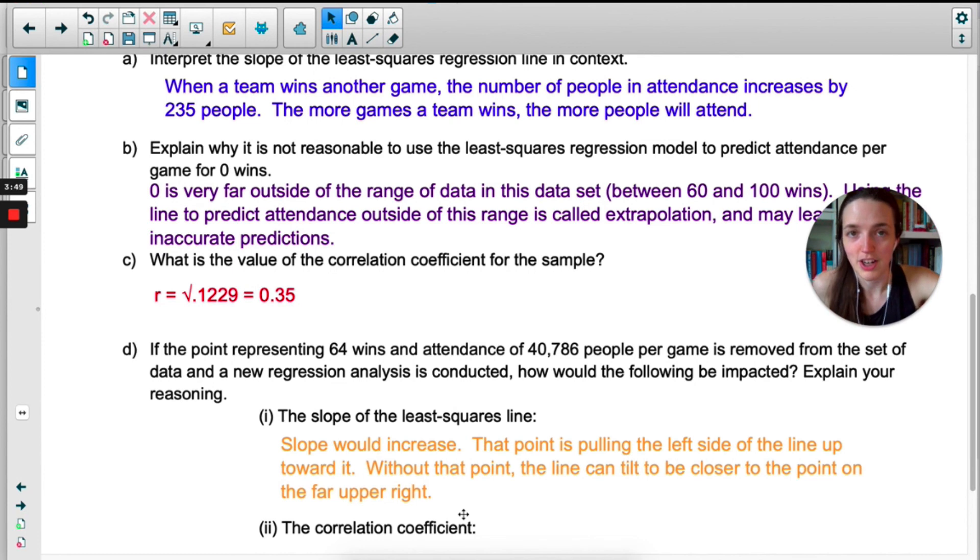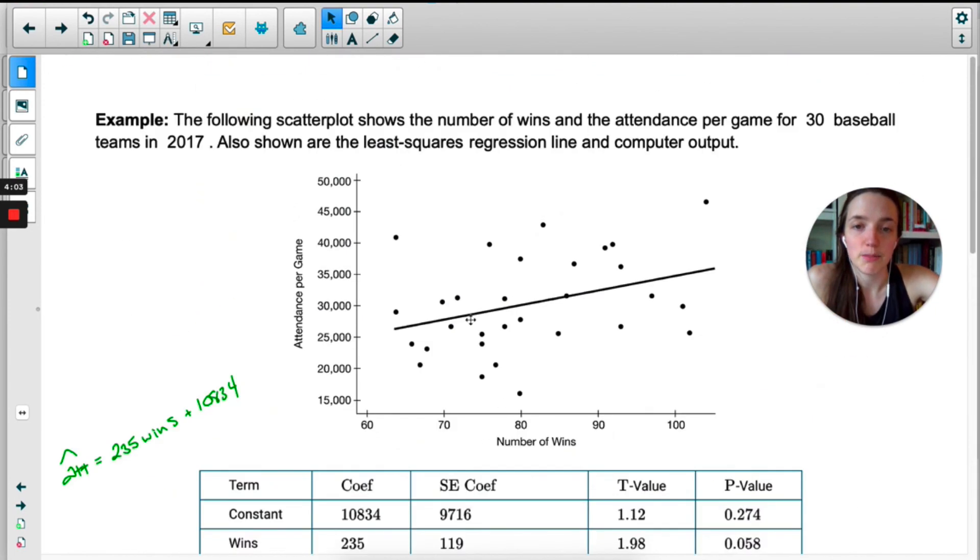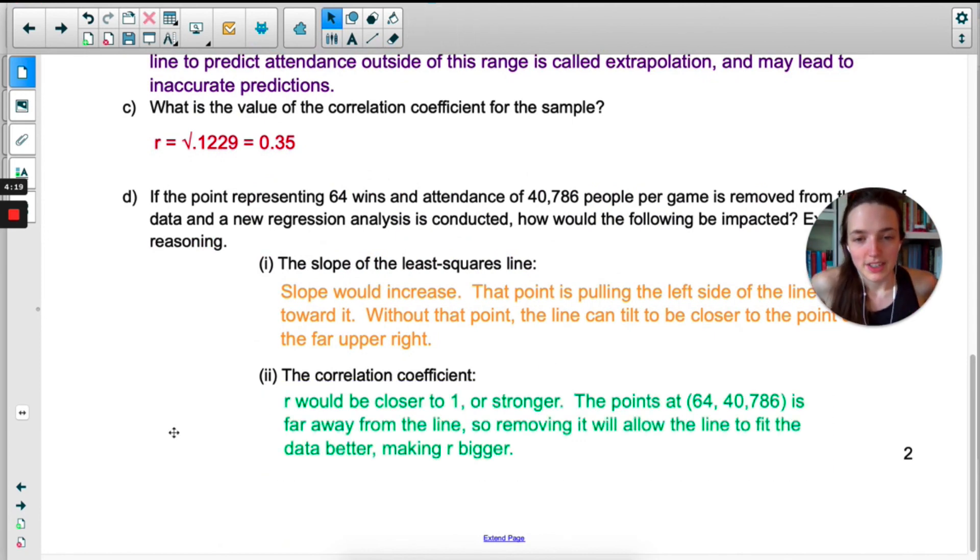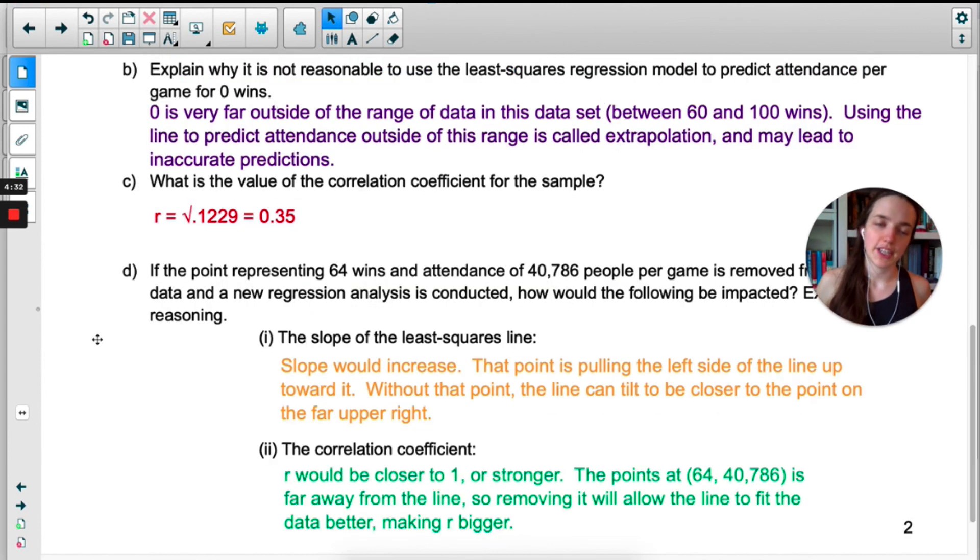Usually with a question like this, the College Board is just looking for you to compare the removed point to the other points. That's what I'm doing here. The correlation coefficient is r. Remember that r is telling you if it's a positive or negative relationship and also how strong the linear relationship is. So if I move this point, if I take it out, I think the dots will be closer to being an actual line, so our r value is going to increase. That point that we're removing is far away from the line, so if we remove it, it allows the line to fit the data better, which would make r bigger. So like I said at the beginning of the video, this is a good review for AP season. Everything on page one of these notes, those are all questions that you might be asked on a free response question or in a multiple choice question on the AP exam.